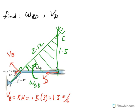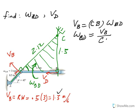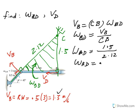Now we're ready to finish up the problem. If we find velocity of B using the instantaneous center, velocity of B equals R times omega, where R is from C to B — from the instantaneous center to point B — times omega BD. Therefore, omega BD equals velocity of B divided by CB. Since CB is 2.12, omega BD is 1.5 divided by 2.12, which gives about 0.707 radians per second, rotating clockwise.